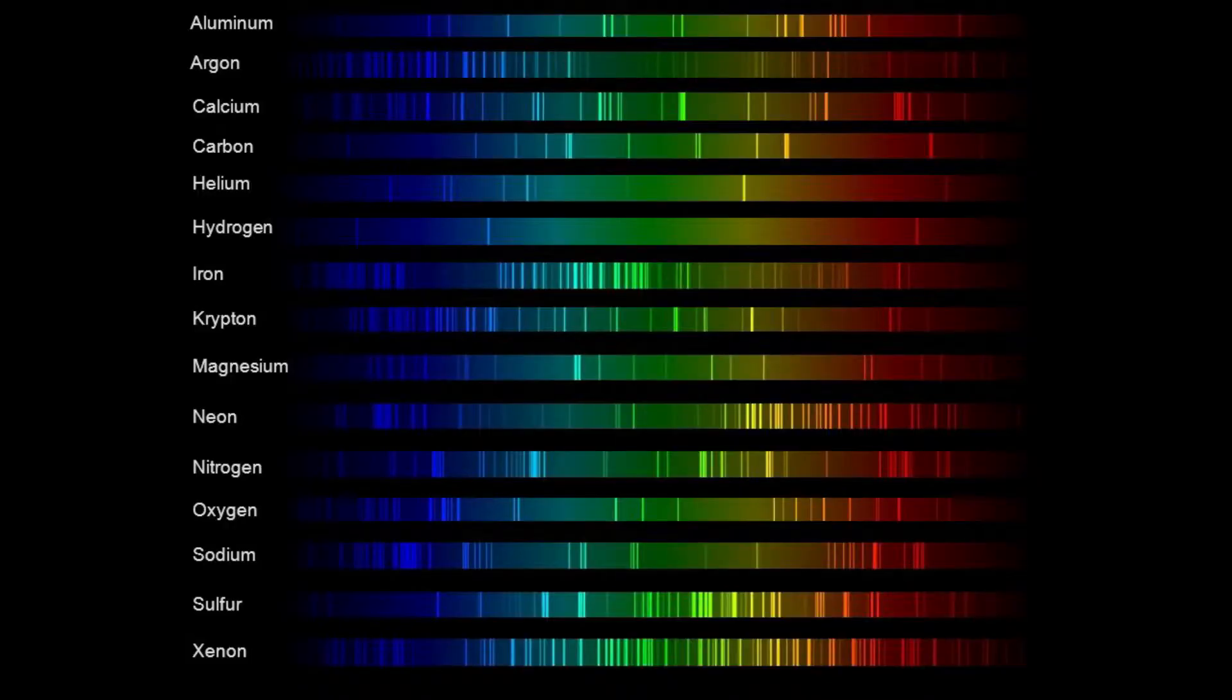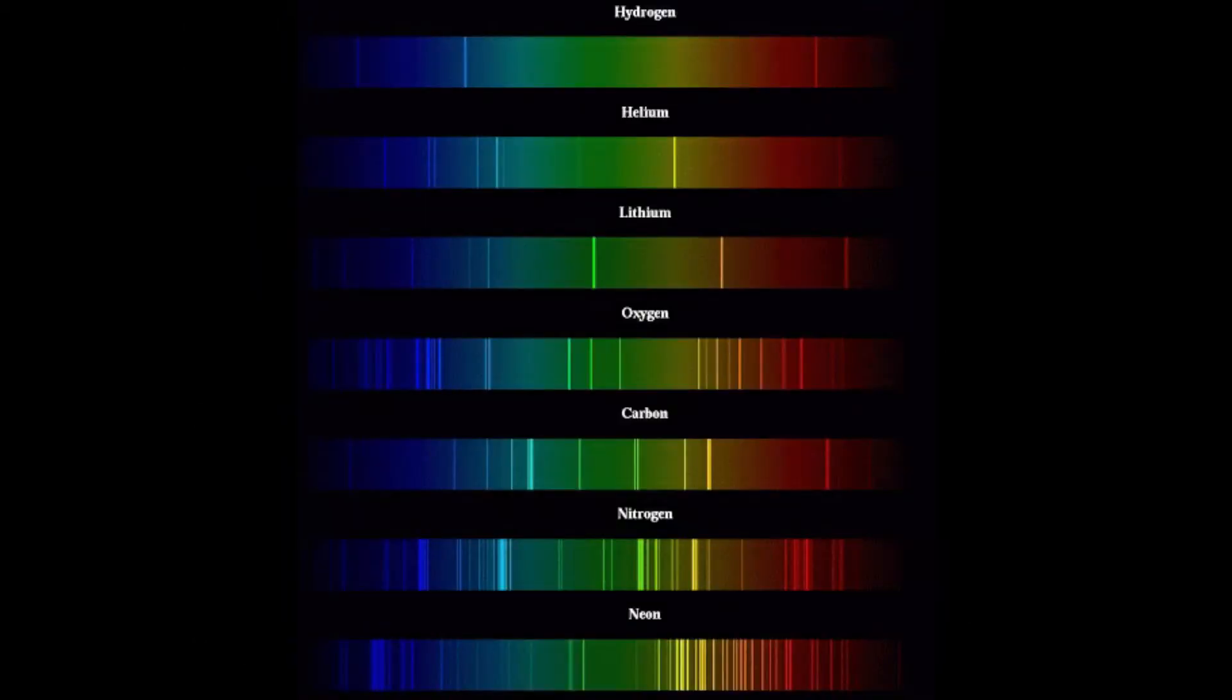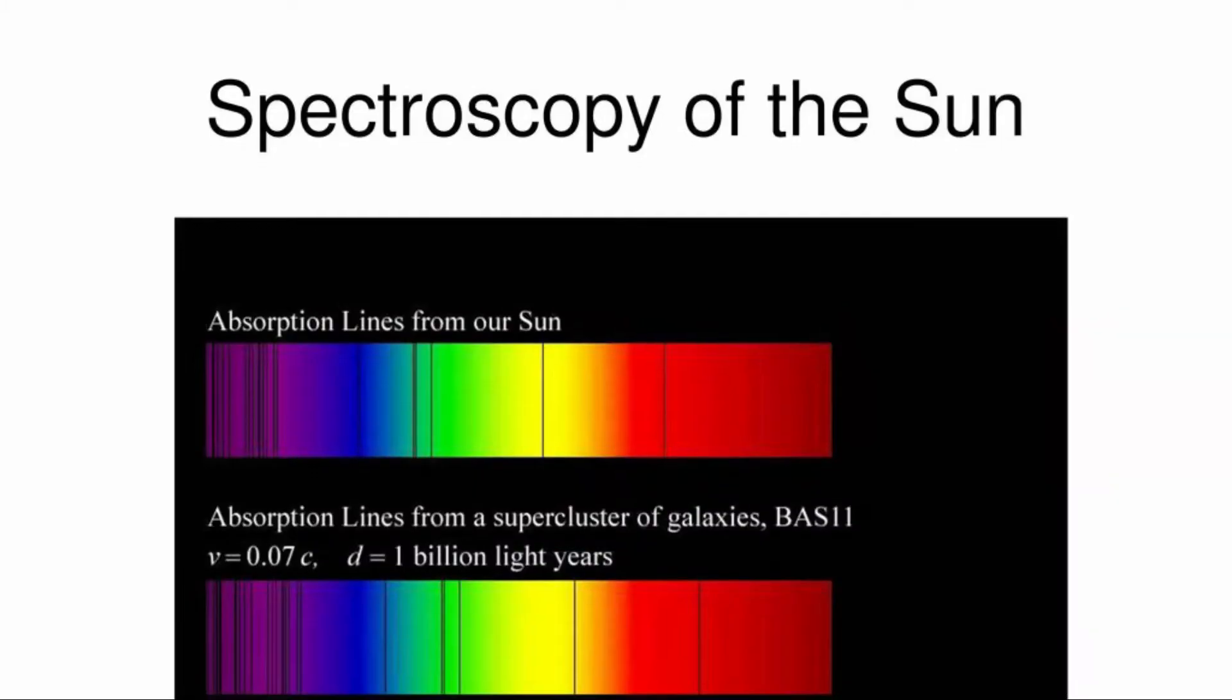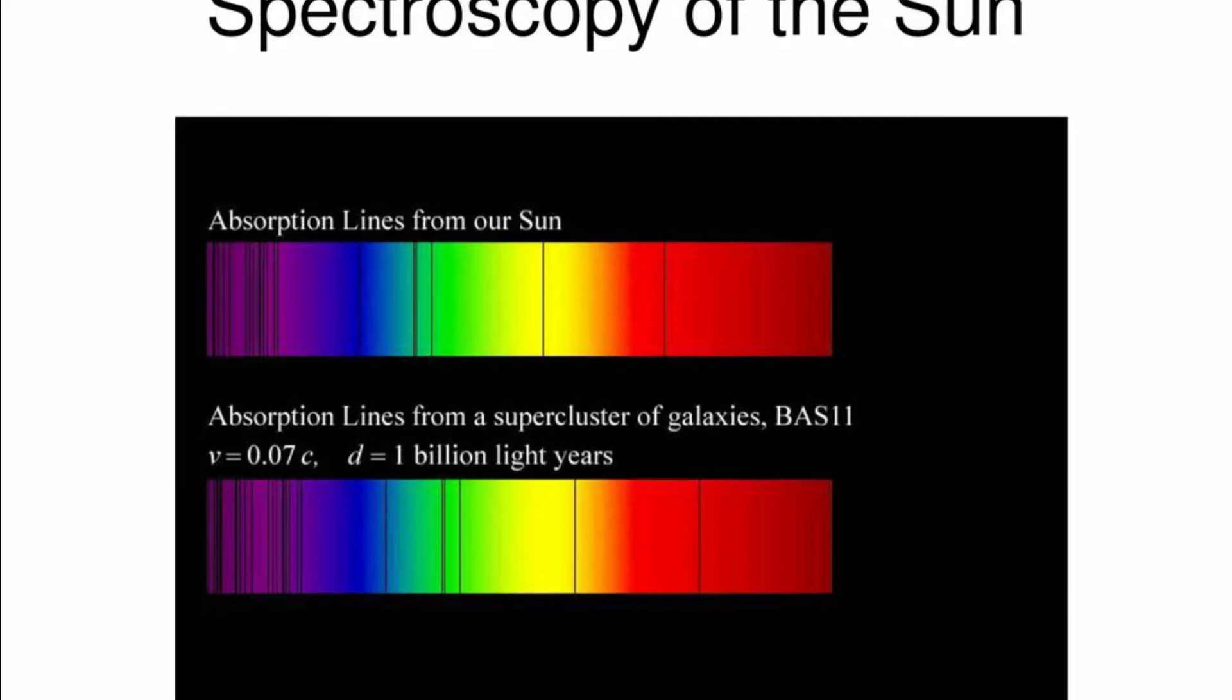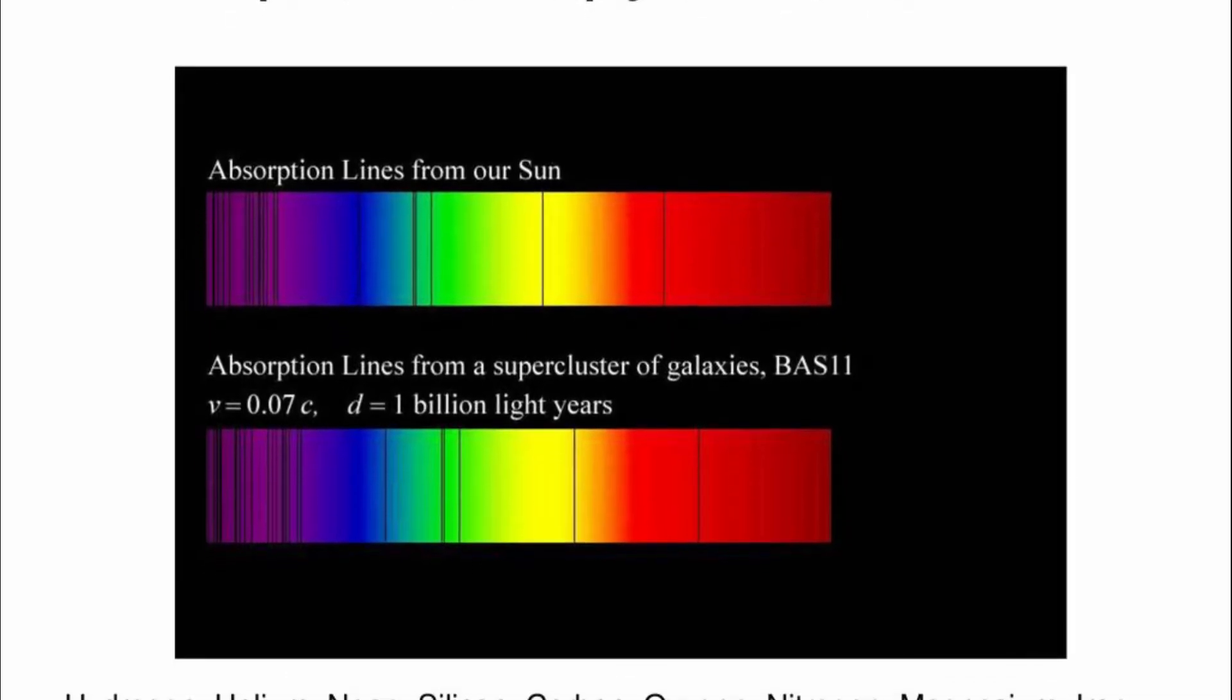Therefore, the location and the spacing of the spectral lines is unique for every atom. Now, once we know the position of these emission and absorption lines, due to laboratory experimentation, we can compare these lines with light from other more complex objects to see their composition. Like a star, this is how we know what's in our sun.